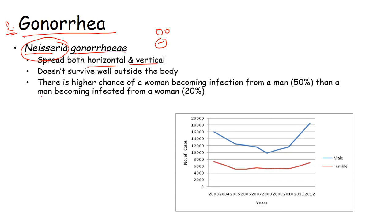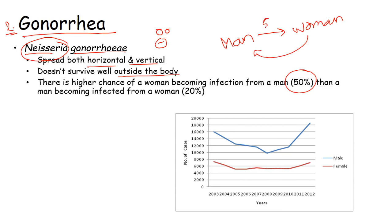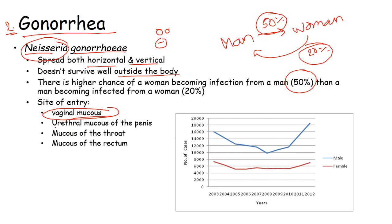Neisseria gonorrhoeae spreads through horizontal and vertical transfer. It does not survive well outside the body. There is a higher chance of a woman becoming infected from a man — the chance of a woman getting the disease from a man is 50%, while the chance of a man getting the disease from a woman is only 20%.